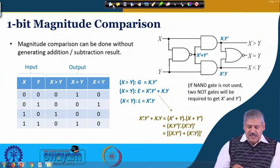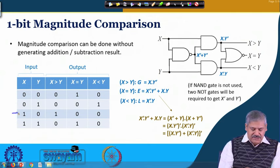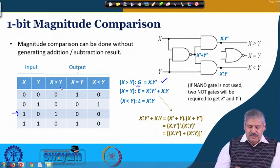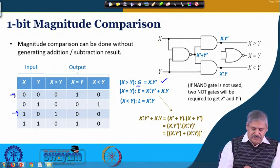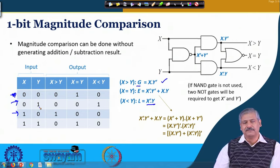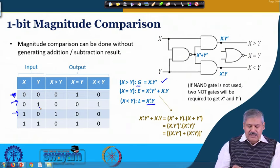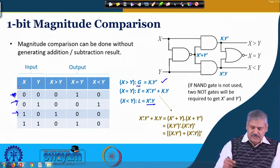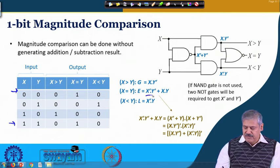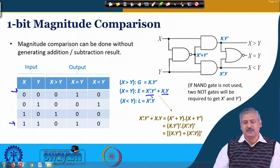From this we can see that x greater than y occurs for the combination x=1, y=0, giving us x·y'. We denote g for greater than. Then x less than y occurs when x=0 and y=1, giving us x'·y. And finally, x equal to y occurs for two cases: x=0 y=0 giving x'y', and x=1 y=1 giving x·y. Summing them up gives the final expression.